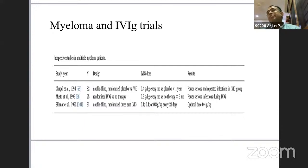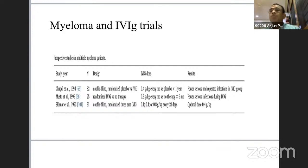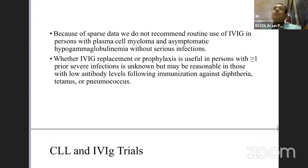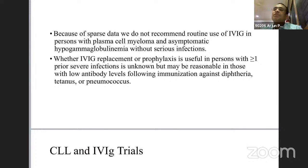Three important myeloma IVIG trials from 1993, 1994, and 1995 all showed fewer infections in the IVIG groups, fewer serious infections, and determined the optimal dose to be 0.4 grams per kilogram body weight. Because of sparse data, routine use of IVIG in plasma cell myeloma patients with asymptomatic hypogammaglobulinemia without serious infections is not recommended. Clinical need is paramount. IVIG is still a reasonable approach when patients have low functional antibody levels and serious recurrent infections.